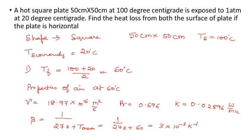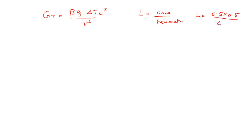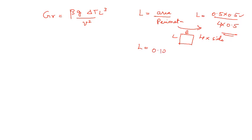Once this is done, we have to find the Grashof number using the formula Gr = β·g·ΔT·L³ / ν². For a horizontal plate, L is calculated as area divided by perimeter. L = (0.5 × 0.5) / (4 × 0.5) = 0.125 m, since the plate is square.